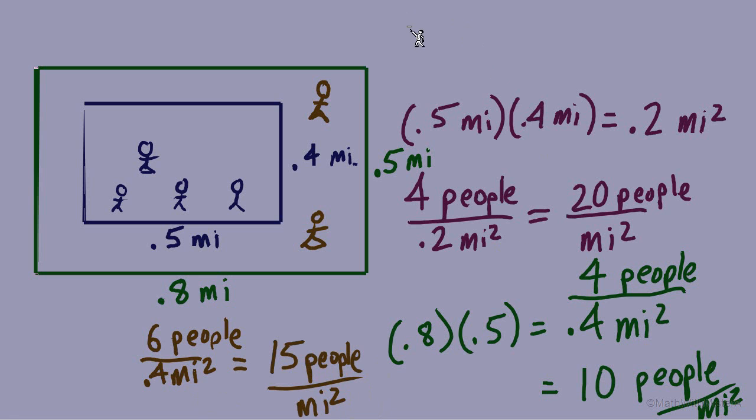And just remember, when it comes to population density, we'll always set up a fraction. How many people compared to how much area they're in. And once we set up the fraction, we can find the unit rate by dividing. Numerator divided by denominator.